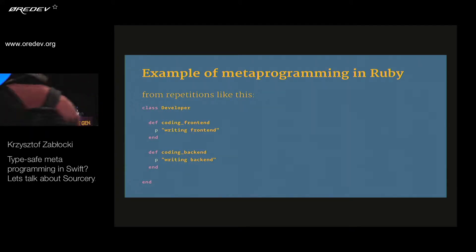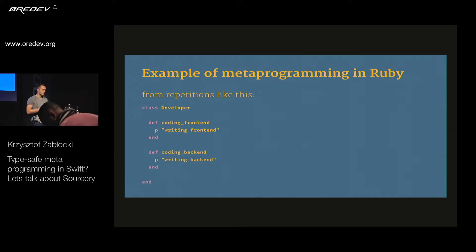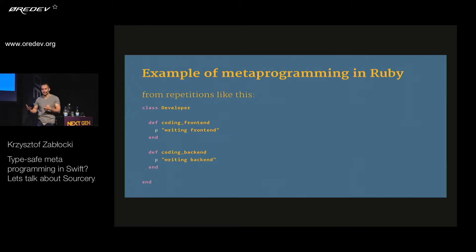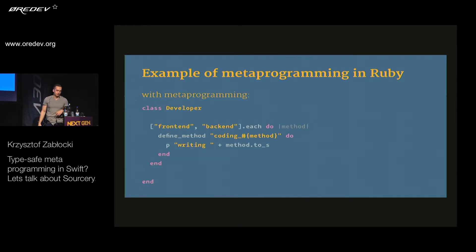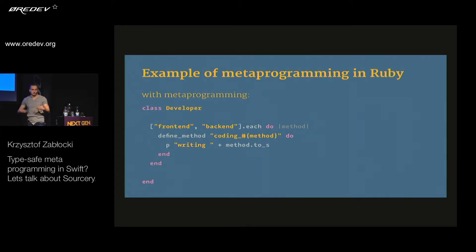Let's look at a language that has metaprogramming built in. One of the best is Ruby because it's a huge part of the language, it's built in, and it works very well. Let's say you have two functions that are very similar — they have some functionality that's basically the same, with slight differences between implementations. That's a pattern that happens in a lot of projects regardless of language. Rather than repeating ourselves, with Ruby you can define an array and for each item in that array you generate a function automatically that fills all the boilerplate repetitions for you.